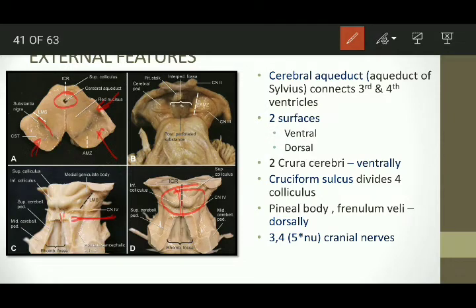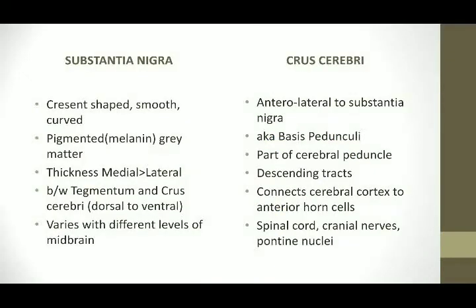The external features of midbrain include cranial nerves on the ventral lateral aspect, which are the third and fourth cranial nerves. The trigeminal nerve also has one nucleus in the midbrain. The substantia nigra is a crescent-shaped, smooth, curved, pigmented grey matter, medially thicker than the lateral side. It is present between the tegmentum and the crus cerebri. The crus cerebri, also called the basis pedunculi, is antrolateral to the substantia nigra, is part of the cerebral peduncle, consists of descending tracts, and connects the cerebral hemisphere with the pons.